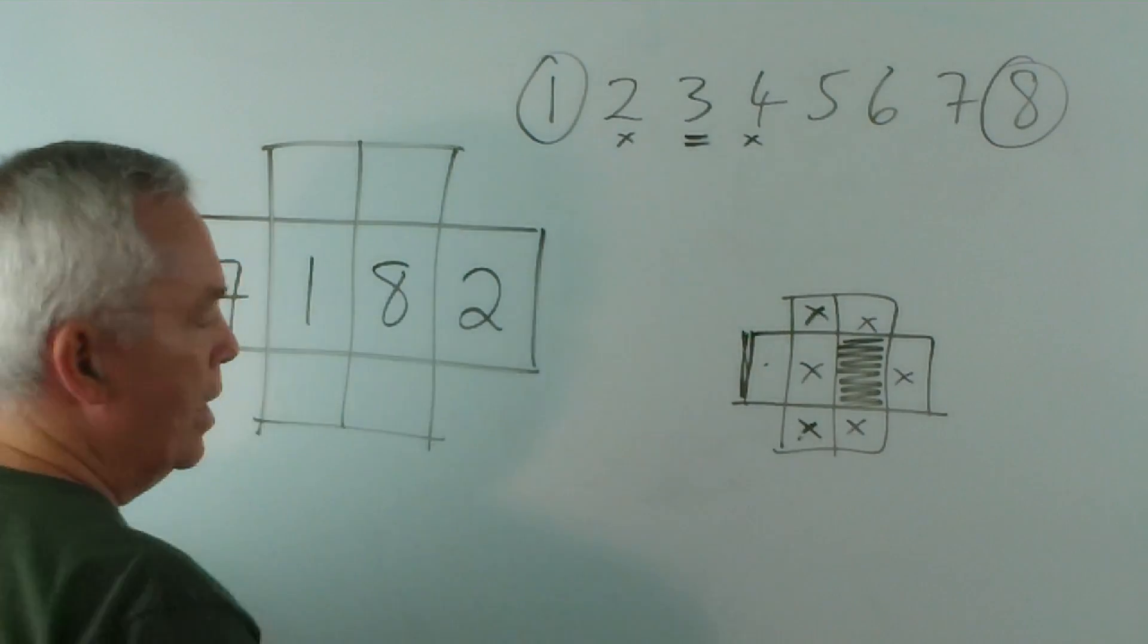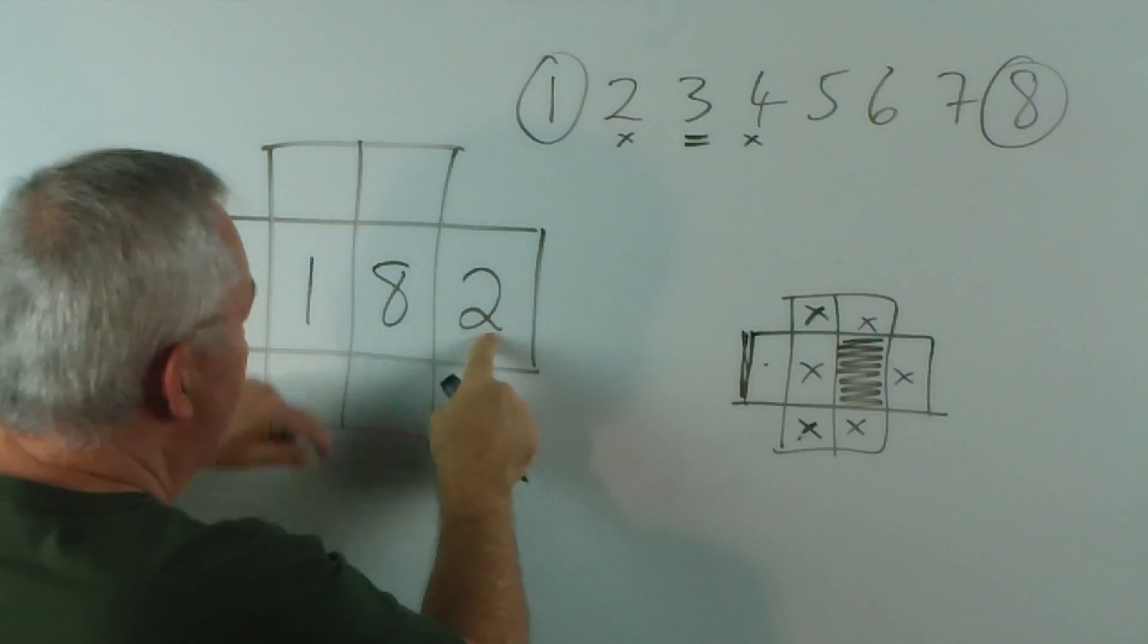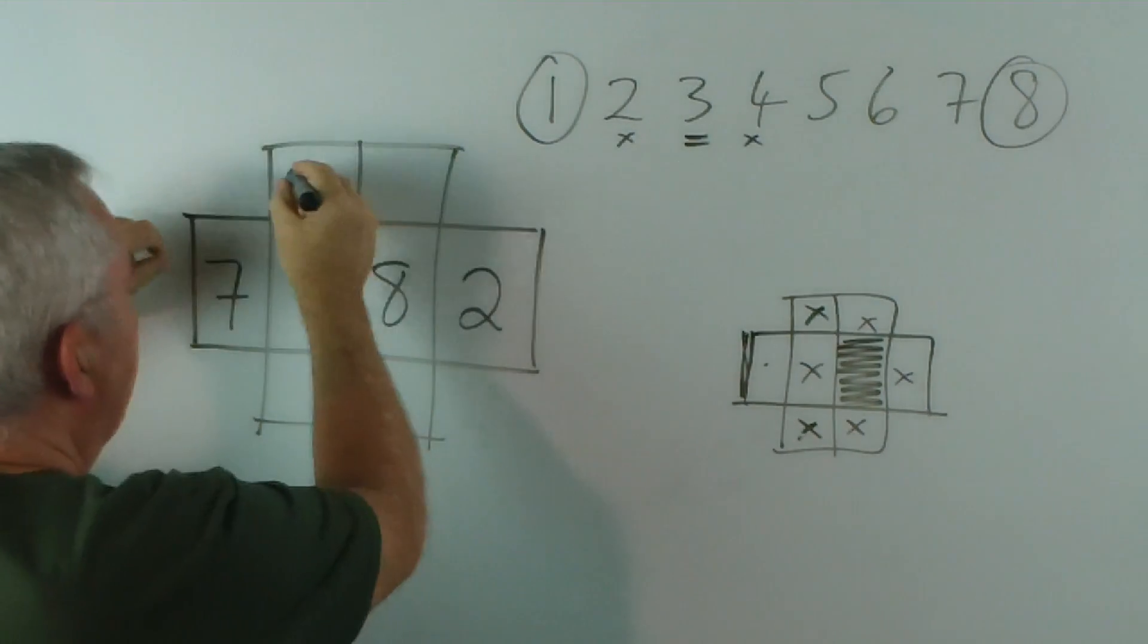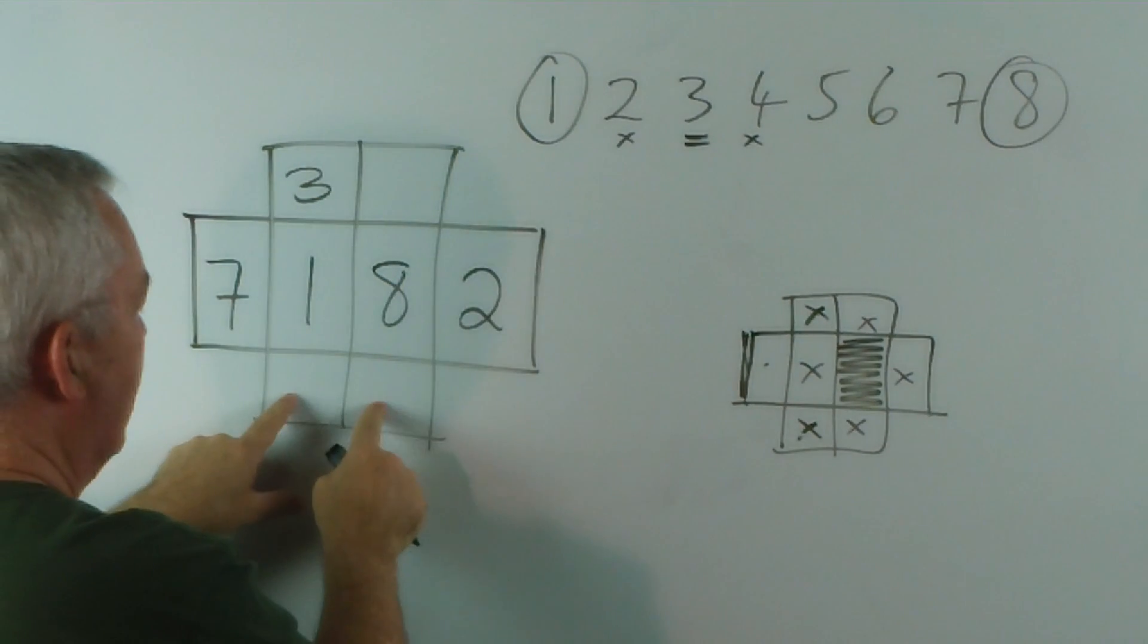And now it only remains for us to find where to put the middle numbers. Now, obviously, if the two's here, the three can't go here.